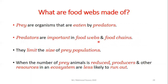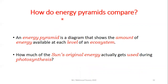Prey are organisms that are eaten by predators. Predators are important in food webs because they limit the size of prey populations. When the number of prey animals is reduced, producers and other resources in an ecosystem are less likely to run out. Having predators controls prey population size, so when prey numbers are reduced, resources will not be exhausted.